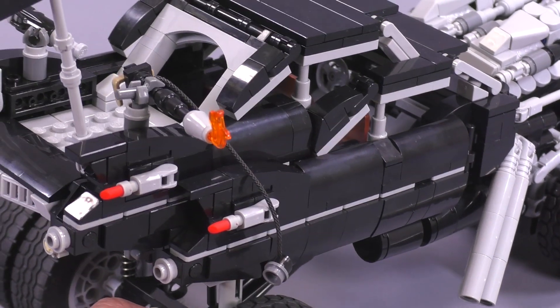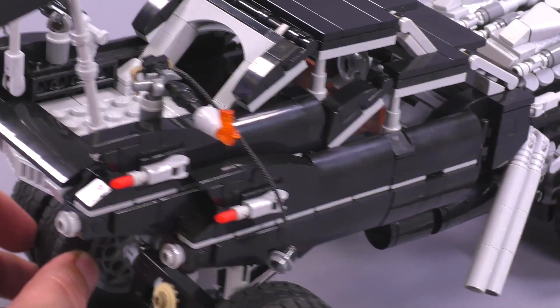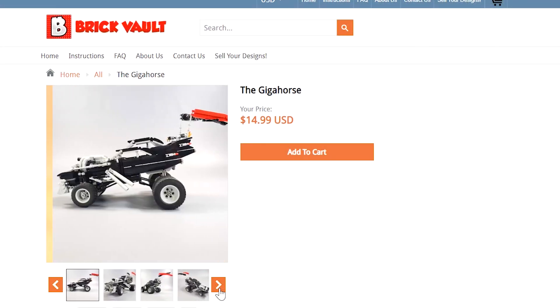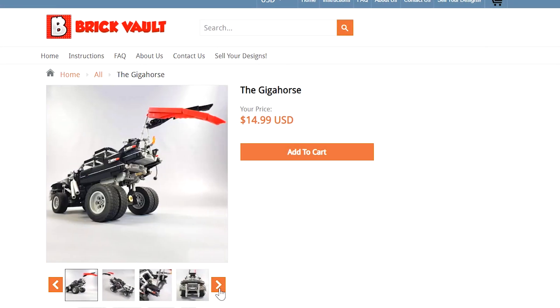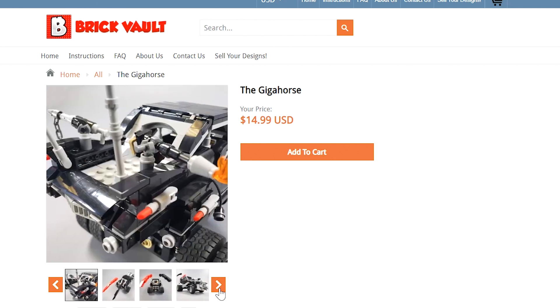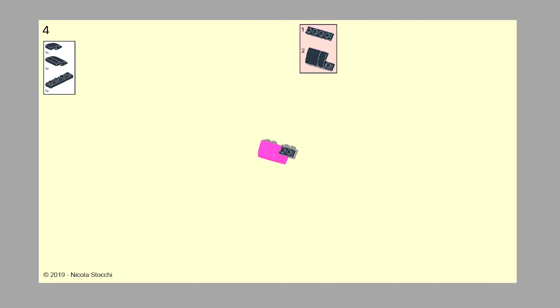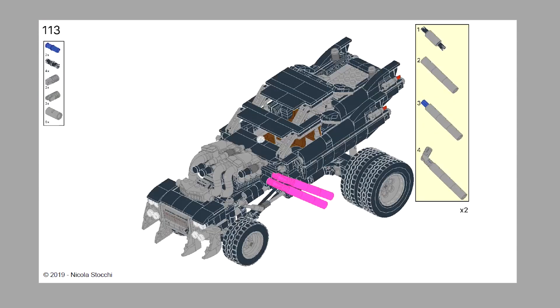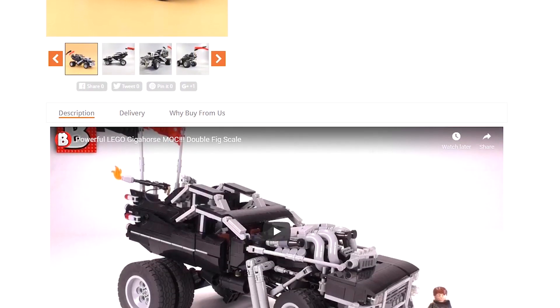Before I go any further into the updates and little details of this build, I will say if you wanted to build it on your own, you can buy the instructions at our web store www.brickvault.toys. Included with each purchase are the PDF step-by-step building instructions as well as a digital parts list for ordering your pieces online. It's a great way to help support what we do here at the channel as well as the amazing designers that we work with like Nicola.